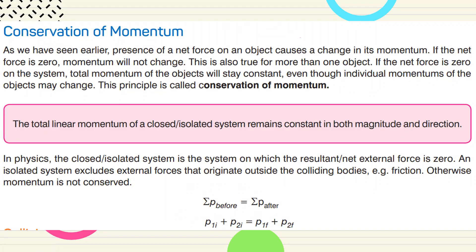Another important one: conservation of momentum. Most questions come from conservation of momentum. The definition: the total momentum of a closed system remains constant in both magnitude and direction. So total initial momentum equals total final momentum. We are using two different objects — they come to each other, collide, then get a new position, maybe going back, or moving together, or separating — three different cases.